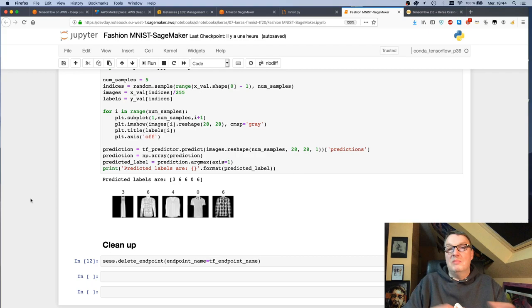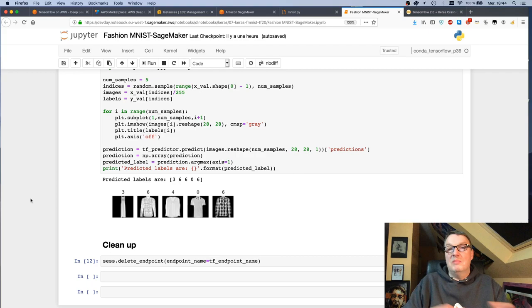I think that's what I wanted to show you today. Remember, three ways you can use TensorFlow 2.0: Deep Learning AMI—make sure you use version 26 and up. Deep Learning Containers. And SageMaker—make sure you use SDK 1.49 and up.